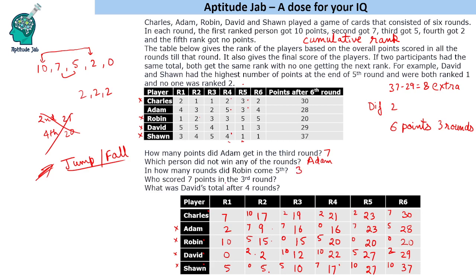Who scored 7 points in the third round? In the third round, 7 points were scored by Adam. Finally, what was David's total after 4 rounds? After 4 rounds, David's total is 22 points. This is the complete solution to the set and the answers to all the questions.